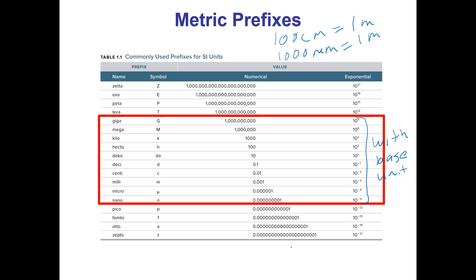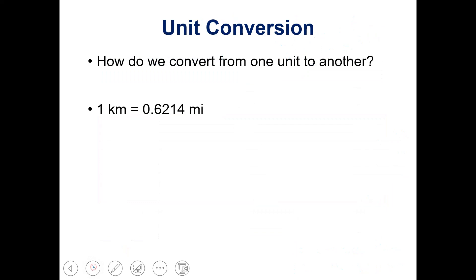For example, one nanometer is one times ten to the negative ninth meters. Now that we know the metric prefixes, how do we convert from one unit to another? We use unit conversions and conversion factors to go from one unit to another — some people also refer to this as dimensional analysis. I would encourage you to get very familiar with doing this and to start thinking about things in terms of a unit conversion.